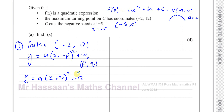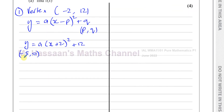We also know one other piece of information: the curve passes through the point negative 5, 0. If it passes through that point, then this point satisfies the equation. When I substitute y as 0 and x as negative 5, that will help me find the value of A. So I'm going to replace x with negative 5.